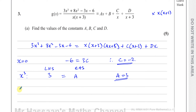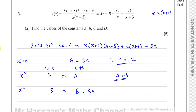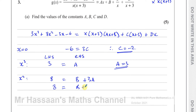Next I'll compare the x squared coefficients. On the left side I have eight x squared. On the right side, the x squared terms come from this bracket: x times x gives x squared, times b gives bx squared; and x times three times a gives three ax squared. So eight equals b plus three a. We know a is three, so eight equals b plus nine, therefore b equals negative one.